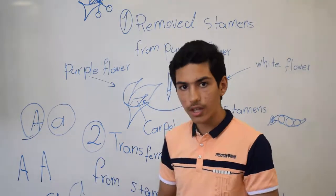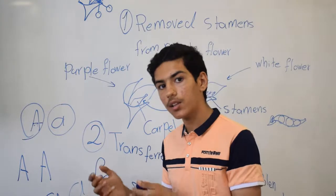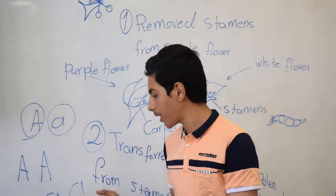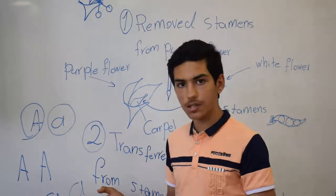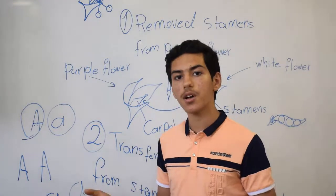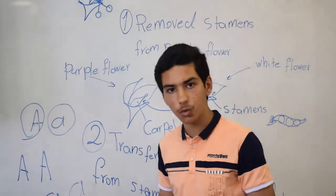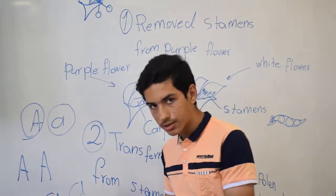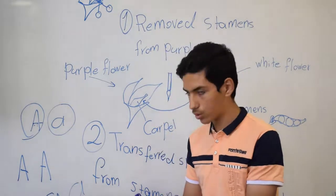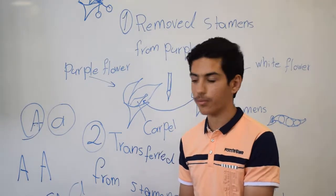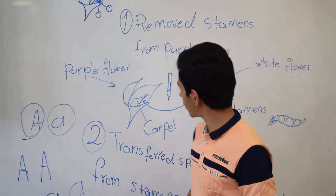We can also write the allele for the pea plant that has a few problems. Because both recessive alleles have problems, this genotype is also called homozygous.